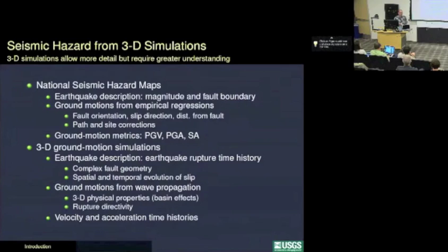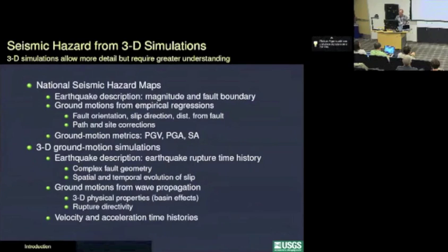They're throwing out a lot of information — information that we know when we do 3D ground motion simulations and try to incorporate smaller scale effects. This includes not just a better description of the earthquake source where we have the propagating rupture, the slip, and the complicated fault geometry, but also in wave propagation we take into account the geologic structure of the sedimentary basins, greater variation in lithology, and rupture directivity — things that just don't come into account in the empirical regressions. Our output also includes velocity, acceleration, and displacement time histories — much more information that can go into better models of ground motion effects, such as running those time histories through structures.